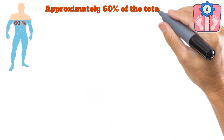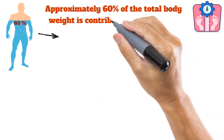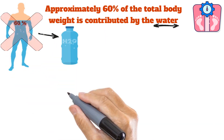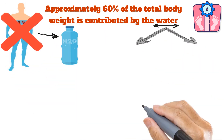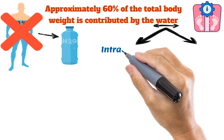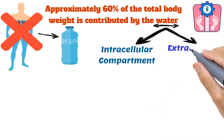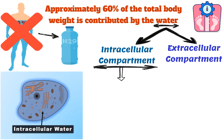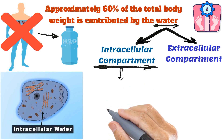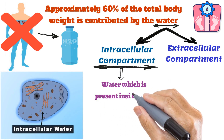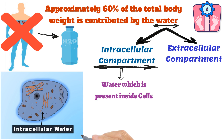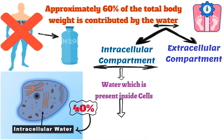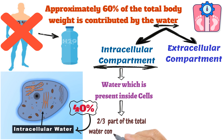Approximately 60% of the total body weight is contributed by water. But this water is not present at a single place. Rather, it is distributed between the intracellular compartment and extracellular compartment. The intracellular compartment basically means the water which is present inside the cell, and its contribution is 40%, or two-thirds of the total water content in the living body.